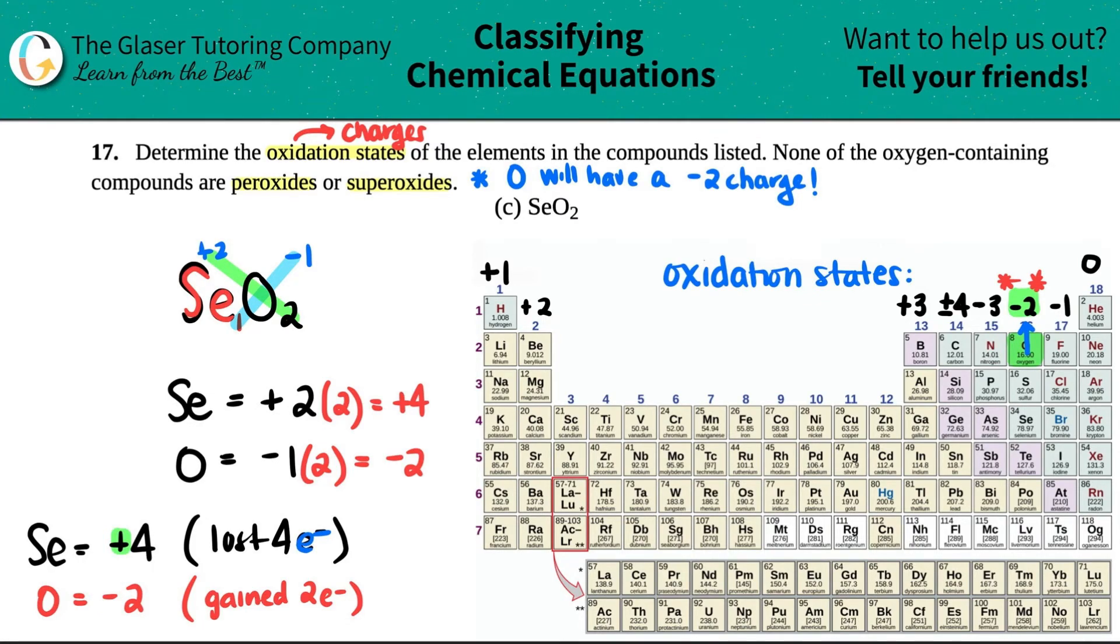And that's it. We just determined the oxidation states. Here they are. Selenium was a plus four. Oxygen's a minus two. And that's the end for this one.